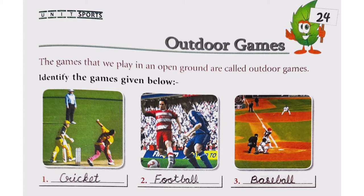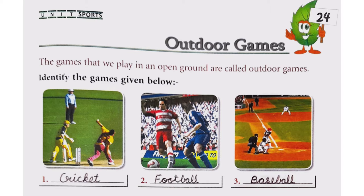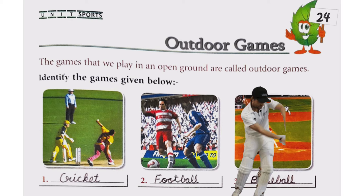let's see the first picture here. We see in this picture one player is having a bat in his hand and the other player is bowling. Two players are from different teams — one is having a bat in his hand and the other is having a ball in his hand. One is bowling and one is batting.